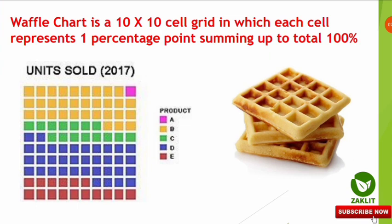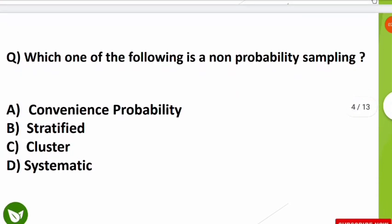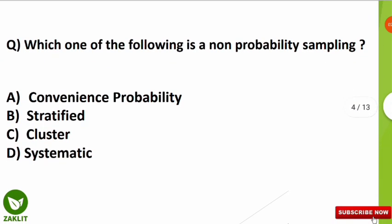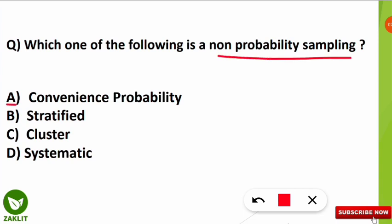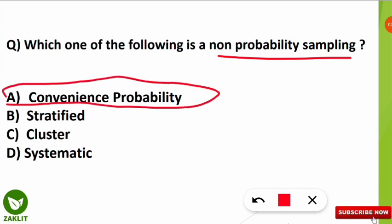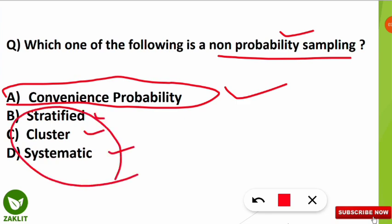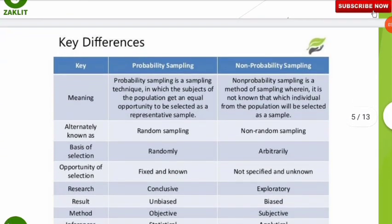The next question is: 'Which one of the following is a non-probability sampling?' This is one of the frequently asked question concepts. The correct answer is convenience sampling — it is an example of non-probability sampling. Stratified, cluster, and systematic sampling are all examples of probability sampling technique.